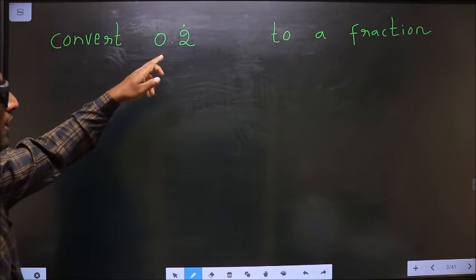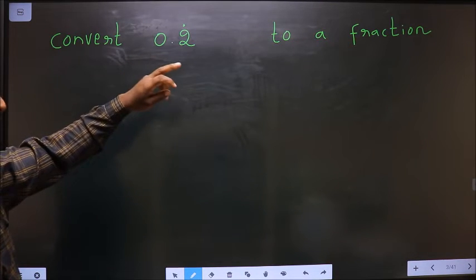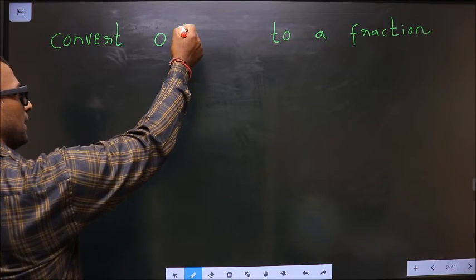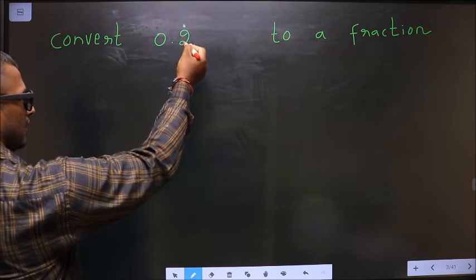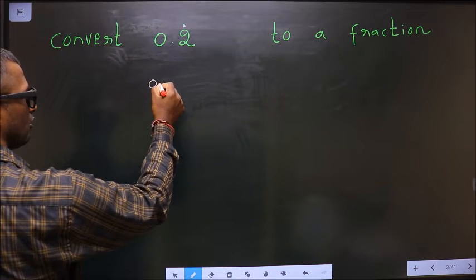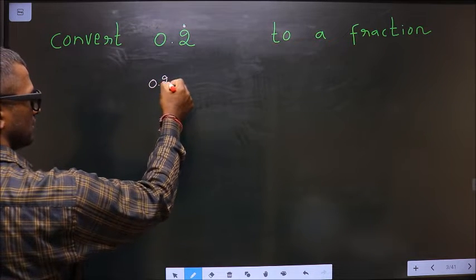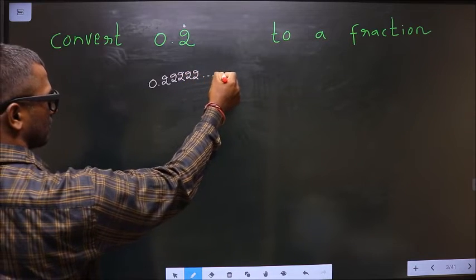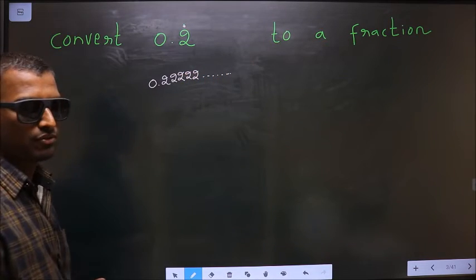Convert 0.2̄ to a fraction. See man, meaning of this dot is, it is present on 2. That means, 2 is being repeated. That is the meaning of dot.